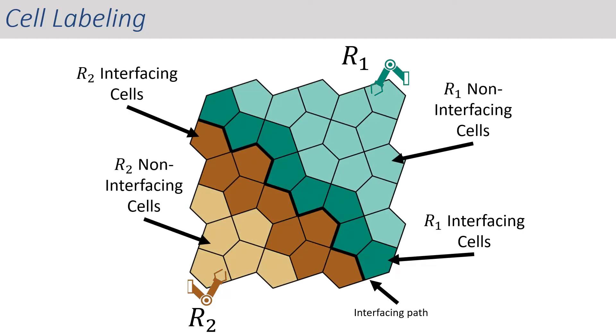Notice that the interfacing cells define the region where collision can occur. Therefore, collision can be avoided between the robots as long as both robots are not printing the interfacing cells simultaneously.